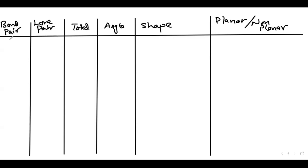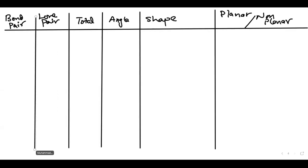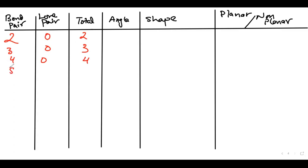Let me fill in the table. For 2 bond pairs and 0 lone pairs, total is 2. For 3 bond pairs and 0 lone pairs, total is 3. For 4 bond pairs and 0 lone pairs, total is 4. For 5 bond pairs and 0 lone pairs, total is 5. For 6 bond pairs and 0 lone pairs, total is 6.